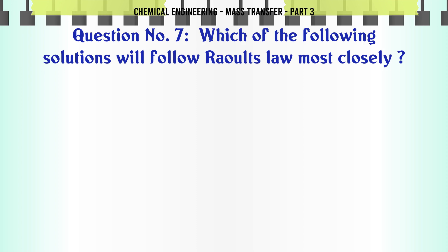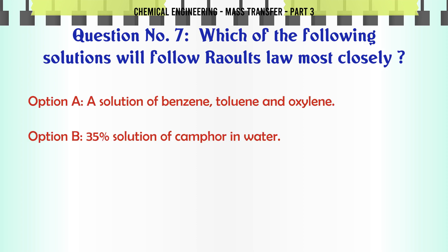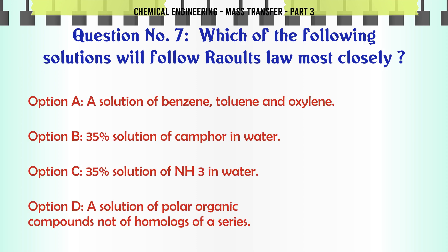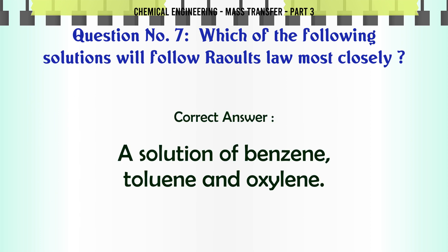Which of the following solutions will follow Raoult's law most closely? A) a solution of benzene, toluene, and xylene, B) 35% solution of camphor in water, C) 35% solution of NH3 in water, D) a solution of polar organic compounds not of homologues of a series. The correct answer is: a solution of benzene, toluene, and xylene.